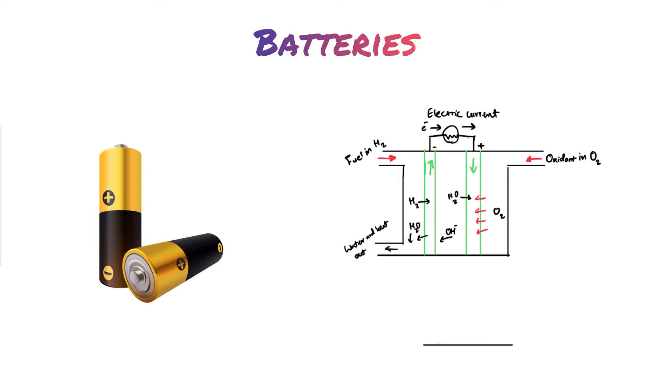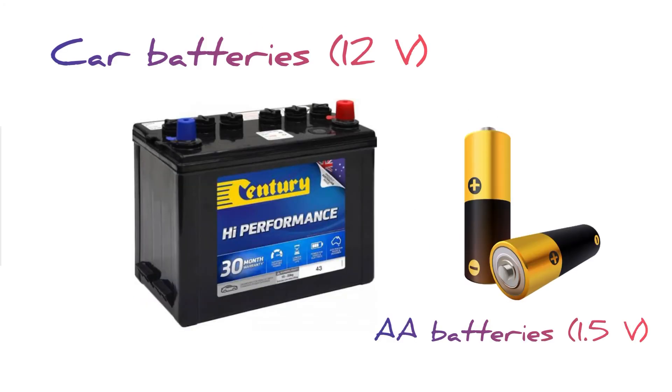The electrodes are both submerged in the electrolyte, which contains either an acidic hydrogen with a positive charge, or an alkaline solution which is a hydroxide ion with a negative charge.